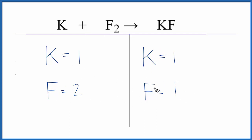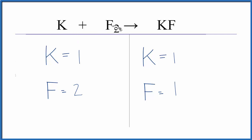What we can do to balance the equation is put a number in front — we can change these numbers in front called the coefficient. Right now they're all one. But we can't change the small numbers, the subscripts like this two here. We can't change those, only the numbers in front.